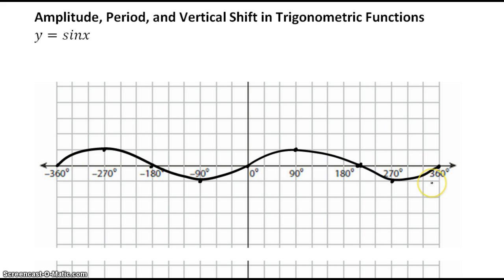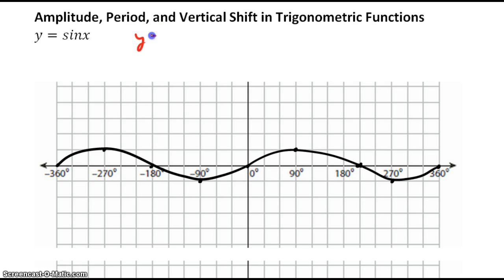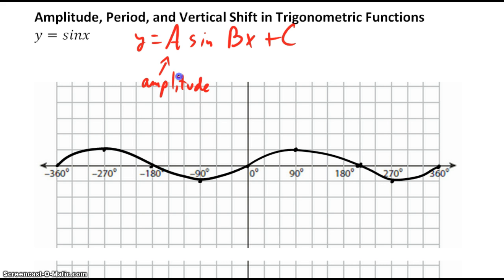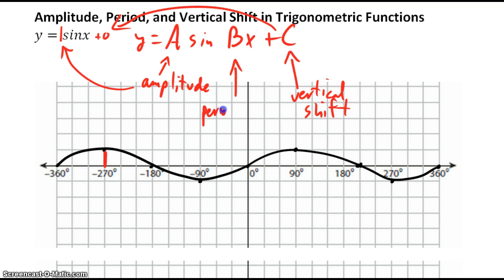If we wanted to do something more complicated, we have y equals a sine bx plus c. I want to talk about what these letters mean. 'a' is the amplitude — that's how tall the curve is, and it's 1 here. 'c' is the vertical shift; here it's plus 0 because the curve is not going up or down. 'b' is the most complicated.